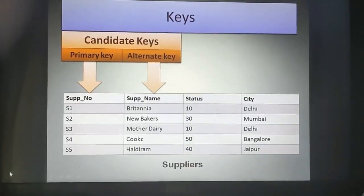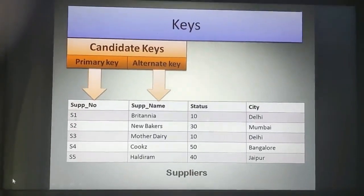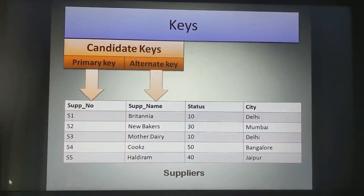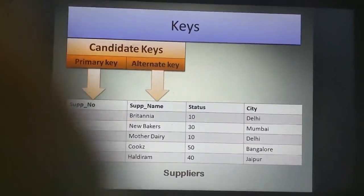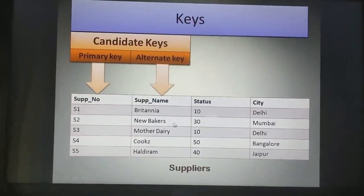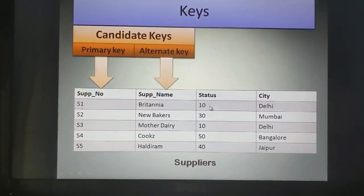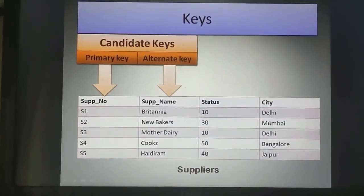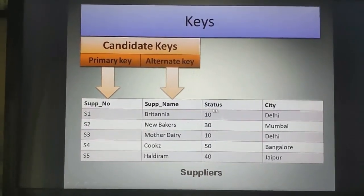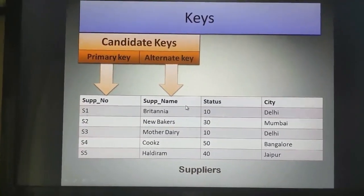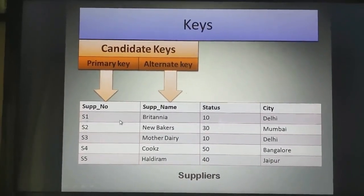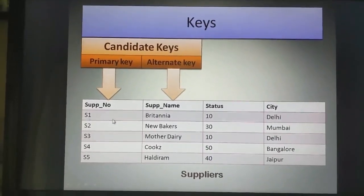Now, what are keys? We can see a table over here by the name of suppliers. There are 4 attributes: supplier number, supplier name, status, and city. Now if you see the values under the attributes carefully, you will find that under the attribute status, the value 10 is repeated twice. Under the attribute city, Delhi is repeated twice. Under the attribute supplier name and supplier number, all the values are unique.